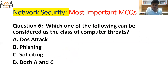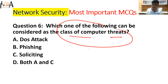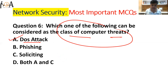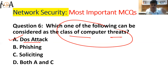Question number six: which one of the following can be considered as a class of computer threats? The important terminology here is Denial of Service attack — DoS attack. Phishing and soliciting are not classes of computer threats. Denial of Service means the user wants to access some file or location, but it is being made unavailable to the user — that is called Denial of Service.